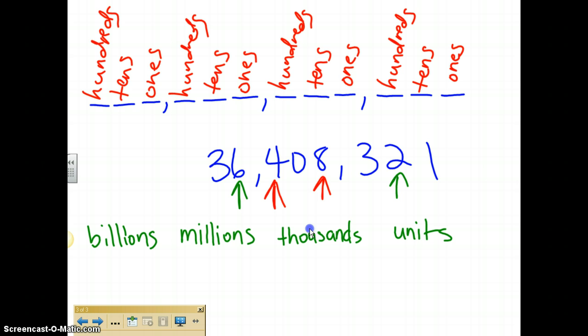So whenever we read numbers, we read their first name, which is what spot they're in in that family: the hundreds, the tens, or the ones. And we read their last name, which would either be the billions, the millions, or the thousands. We don't ever read the last names of the units. So be prepared to come to class ready to look at some numbers and identify the place values of those numbers.